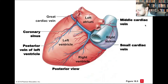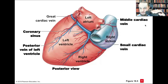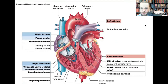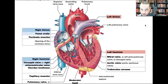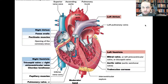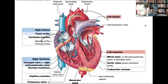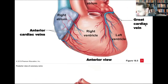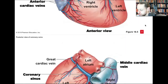The blood flowing through the heart chambers is not what supplies nutrients to the heart muscle itself. The blood that actually feeds the myocardium comes from the coronary arteries branching off the aortic arch. The blood flowing through the right atrium, right ventricle, and so forth is separate from the coronary arterial supply.